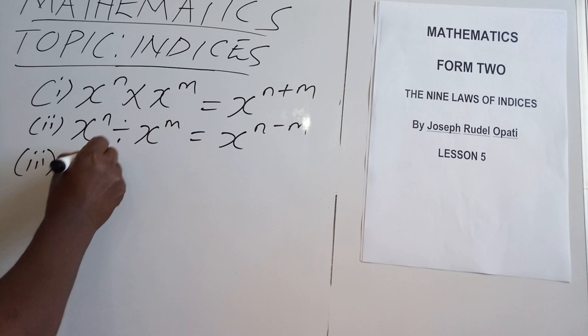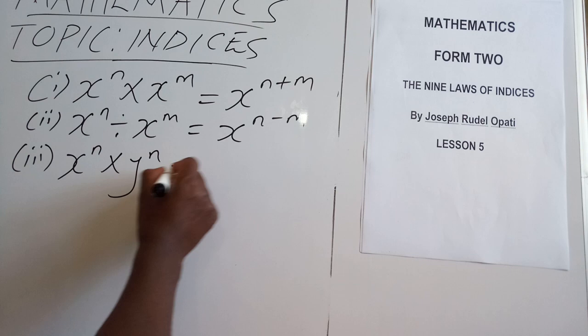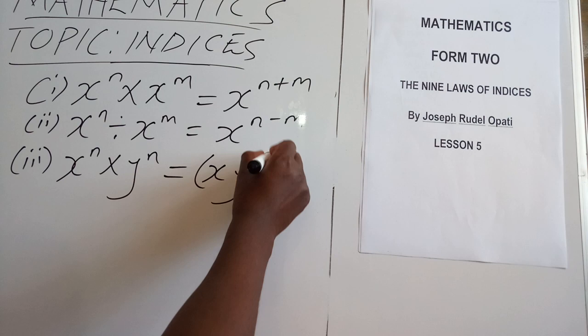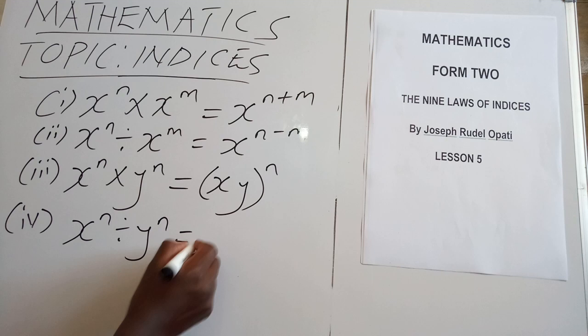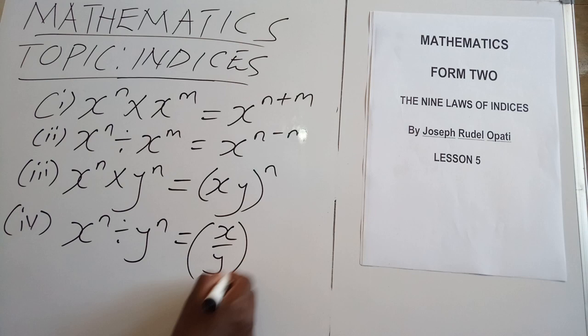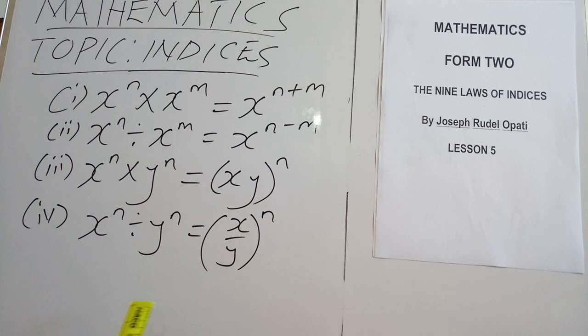Law number three was the law of multiplication of numbers to a similar power. The outcome will be the product of the bases raised to that similar power. Law number four was the law of division of numbers to a similar power — the outcome being you divide the bases and let the outcome assume that similar power.